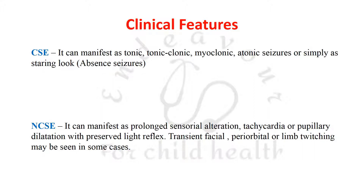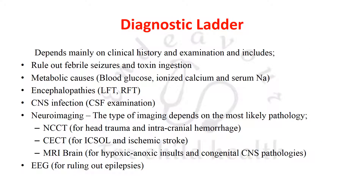Convulsive status epilepticus can manifest as tonic, tonic-clonic, myoclonic, atonic seizures, or absence seizures with a staring look. Non-convulsive status epilepticus can manifest as prolonged sensorium alteration, tachycardia, or pupillary dilatation with preserved light reflexes — a differentiation from cerebral herniation — and transient facial, periorbital, or limb twitching may also be seen.